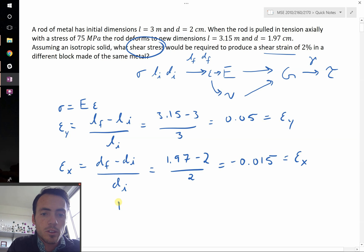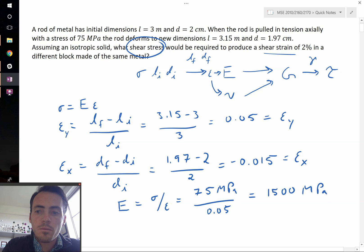We know that Young's modulus is equal to stress over strain, or in this case, it's equal to 75 megapascals divided by the strain in the Y direction, which is 0.05, which means that our total Young's modulus for this material is 1500 megapascals.